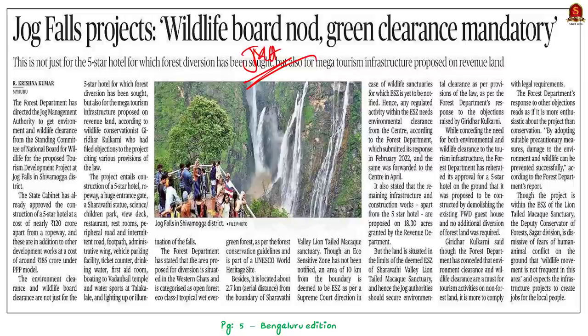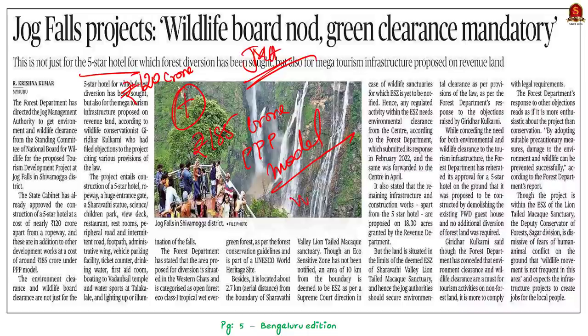The clearance is required for a proposed tourism development project at the Jog Falls in the Shivamoga district. The State Cabinet has already approved construction of a five-star hotel at a cost of nearly ₹120 crore, apart from a ropeway. These developments are in addition to other works costing around ₹185 crore under the PPP model. The Forest Department stated that the area proposed for diversion is in the Western Ghats, categorized as open forest eco class 1 tropical wet evergreen forest, and is part of a UNESCO World Heritage Site.